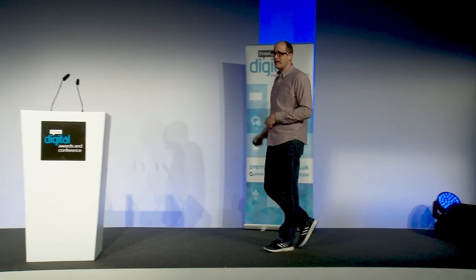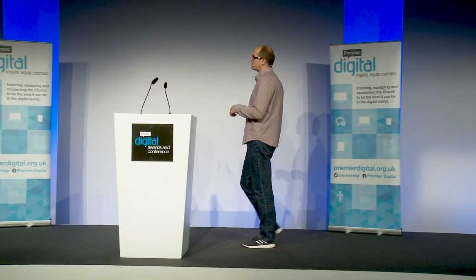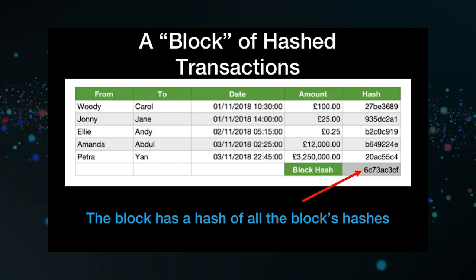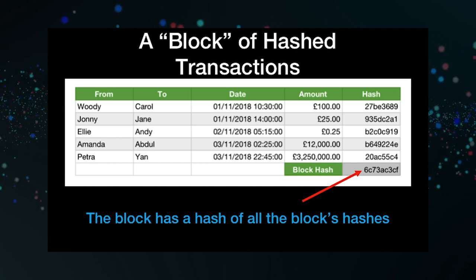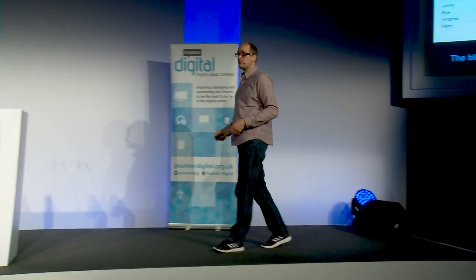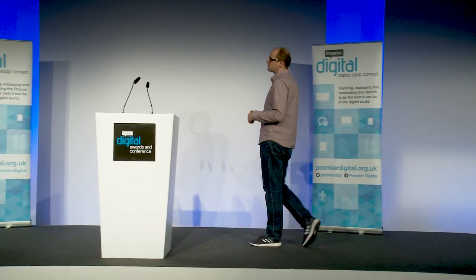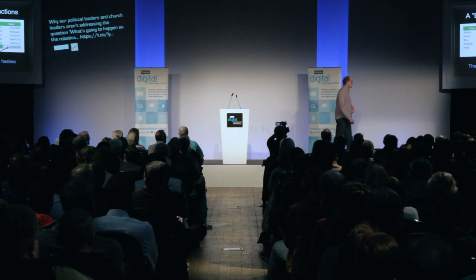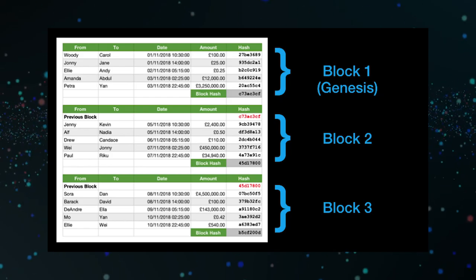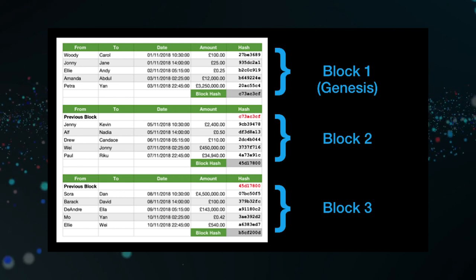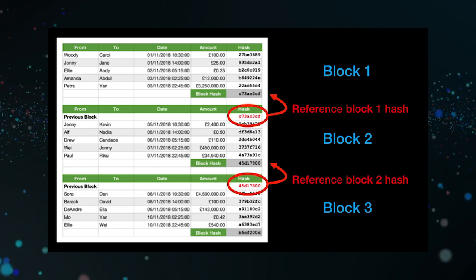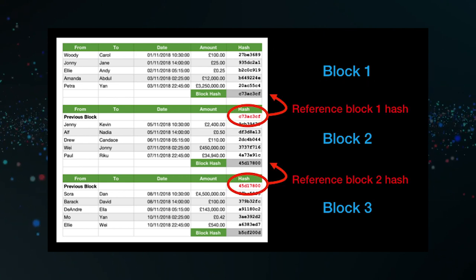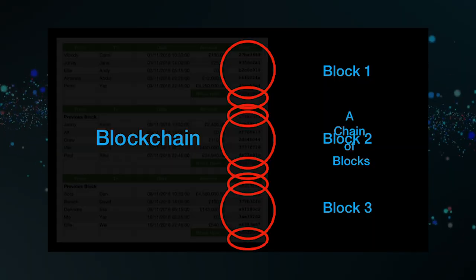The hash is essentially a way of auditing and verifying whether someone's changed a transaction. But you could change the transaction and the hash too. So what you do is create a block of hashed transactions and use all the hashes together to create a block hash. You still could manipulate that, so you create an initial genesis block, then a second block with a reference to the first, a third block with a reference to the second — you hash those blocks together and you end up with a blockchain.